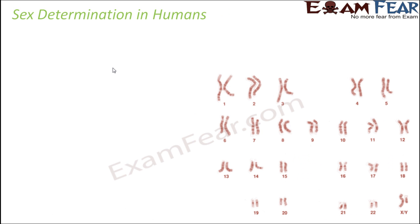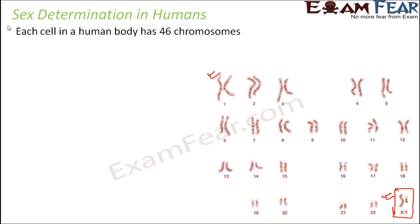Let us look at sex determination specifically in human beings. In human beings we have a total of 23 pairs of homologous chromosomes, out of which 22 pairs are autosomes — from the first pair to the 22nd pair, they are all autosomes. Autosomes means the homologous chromosomes are exactly identical to each other, and these autosomes remain the same in males as well as females. Each cell in the body will have 46 chromosomes, out of which 44 will be autosomes and 2 will be sex chromosomes.